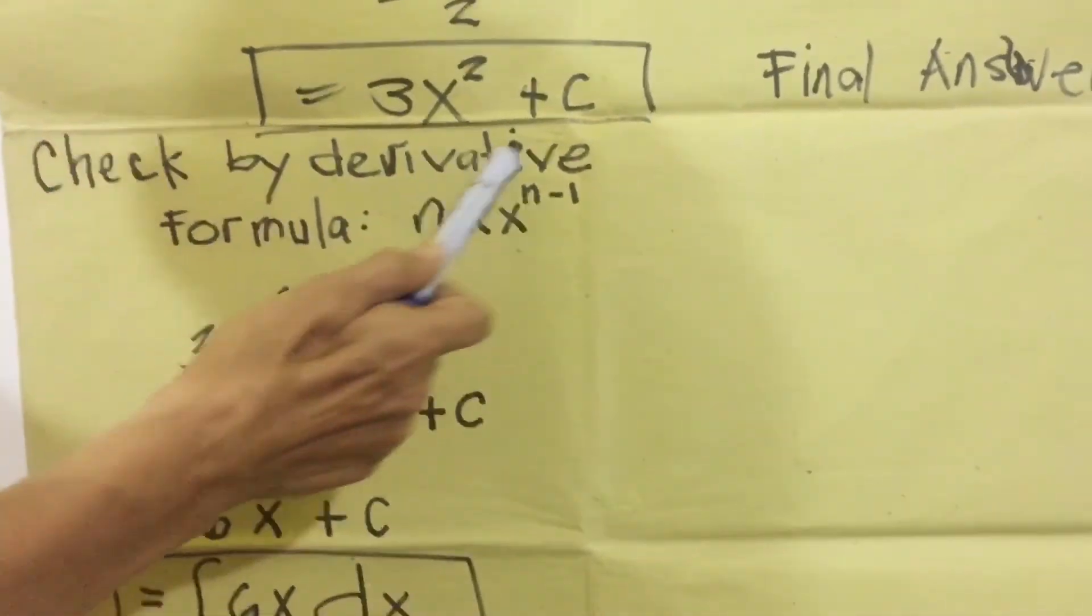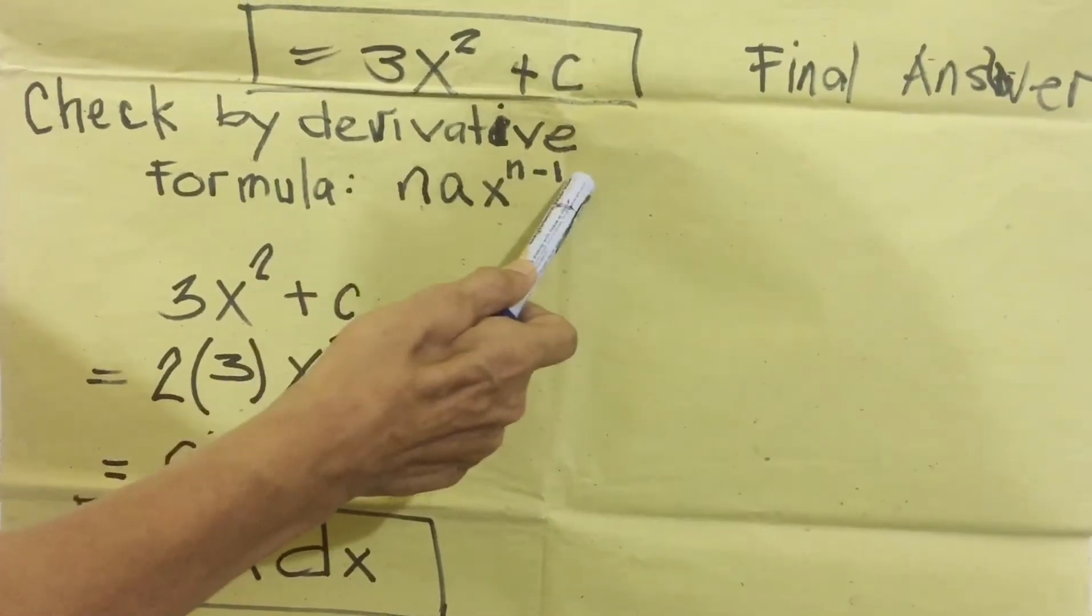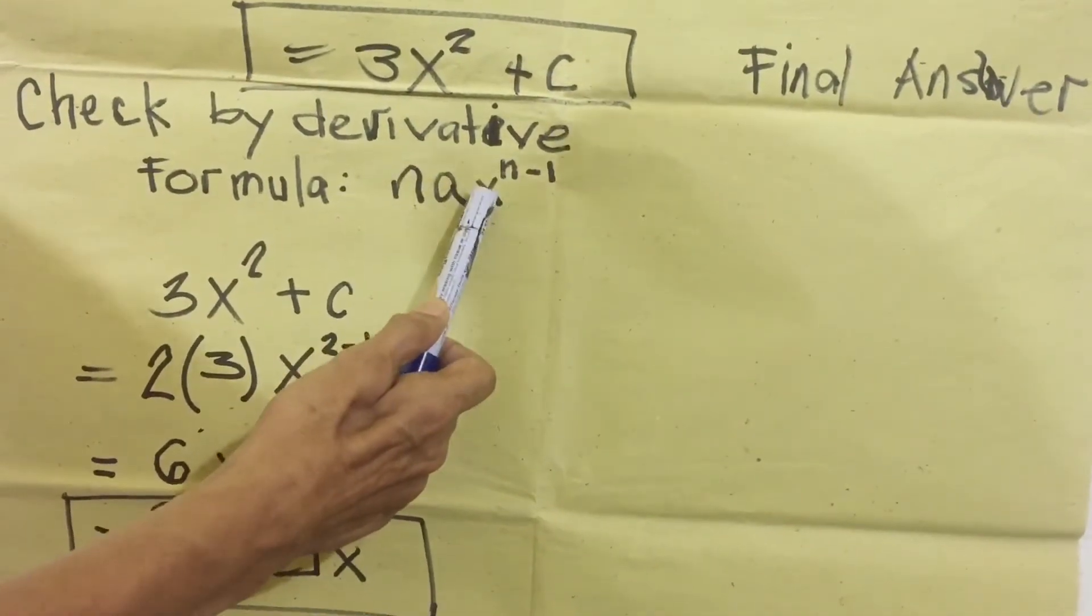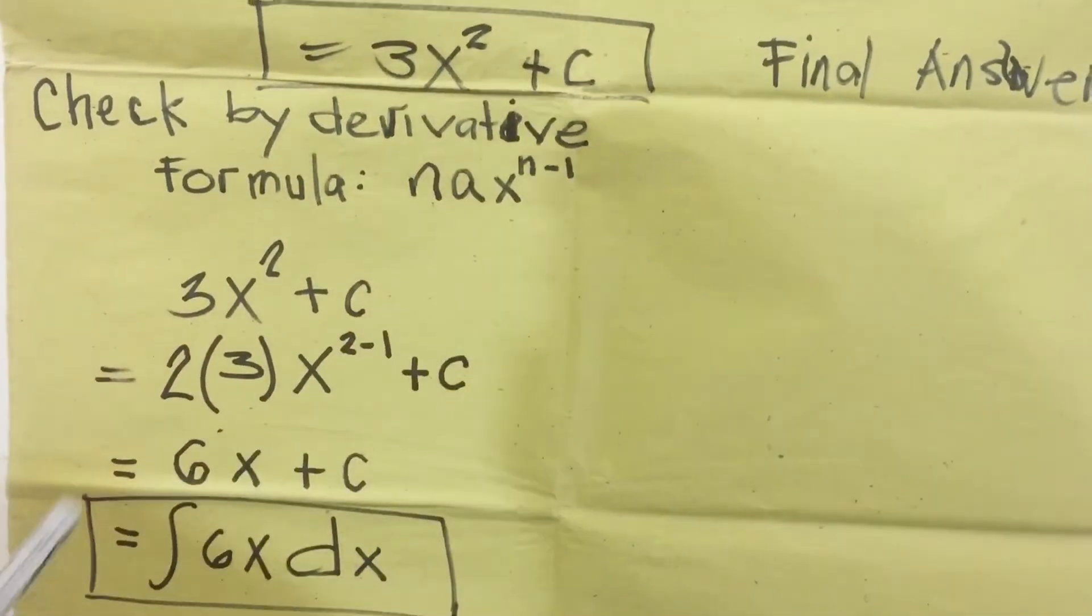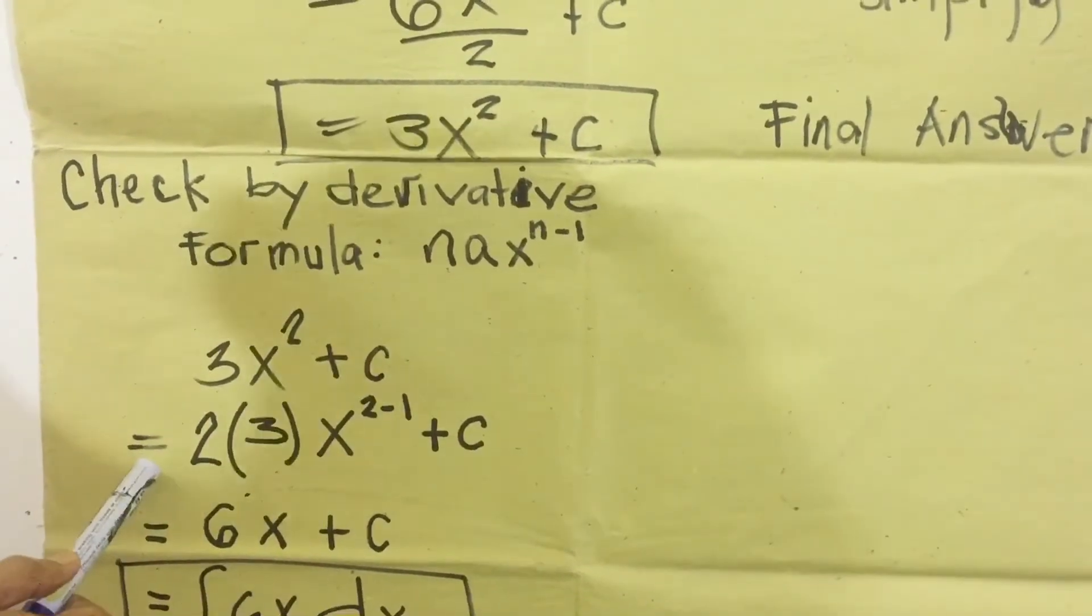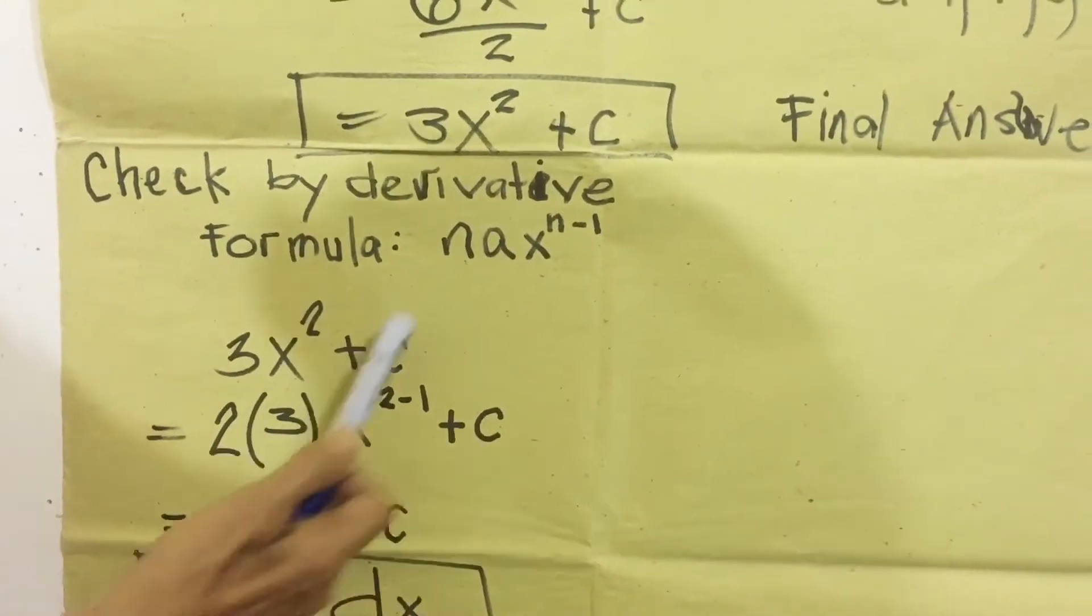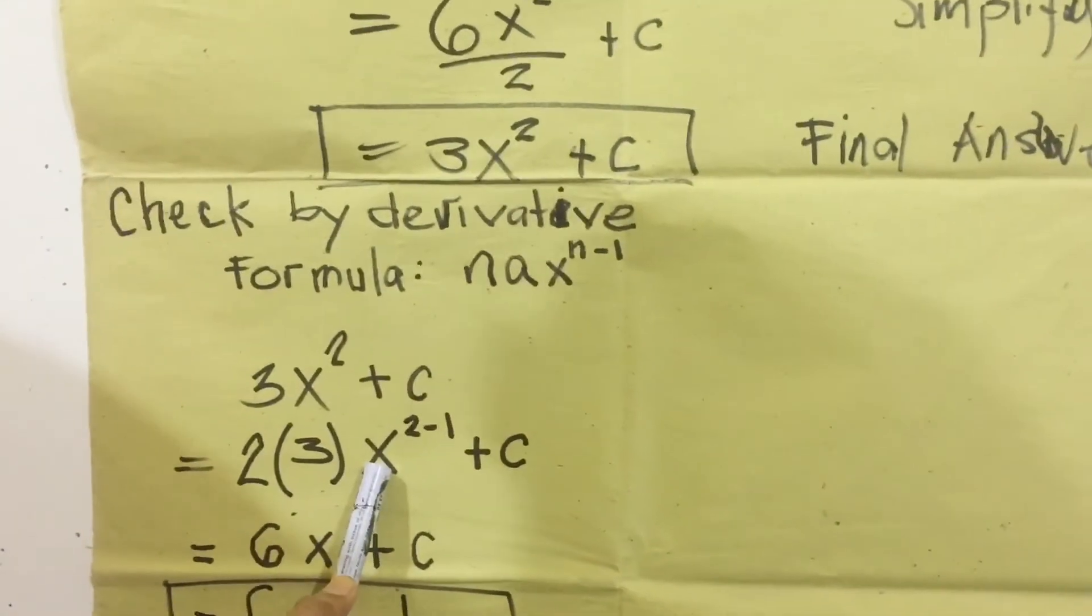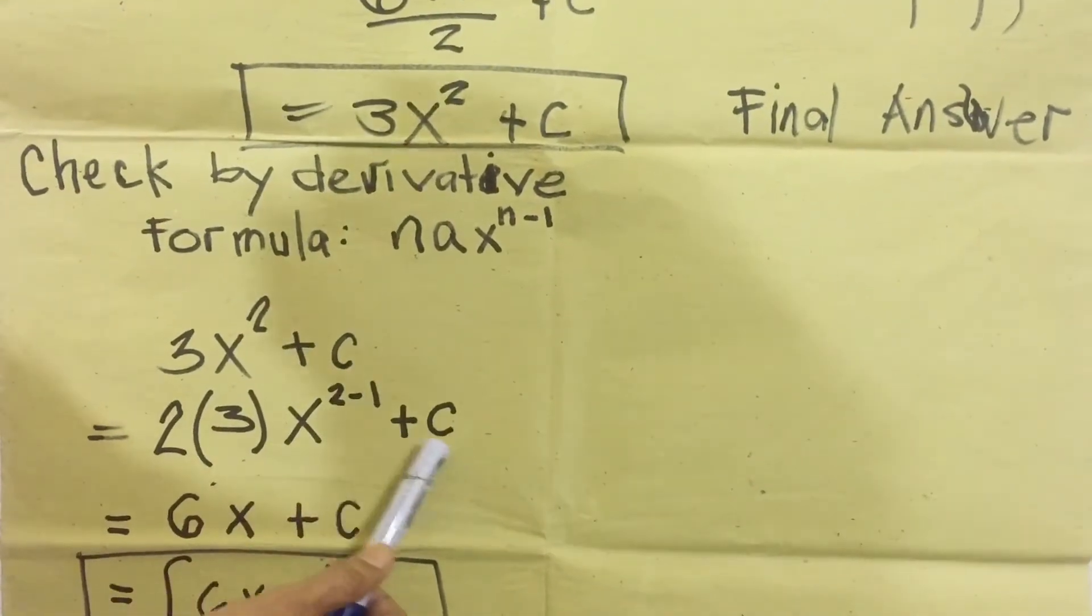To make sure our answer is correct, check using the derivative formula: n A X to the n minus one. N means exponent, A is the numerical coefficient, X variable, n exponent, minus one. Copy our answer, three X squared plus c equals exponent two, then A is the numerical coefficient of the variable, three, then the variable X, the exponent is two, minus one, plus c.